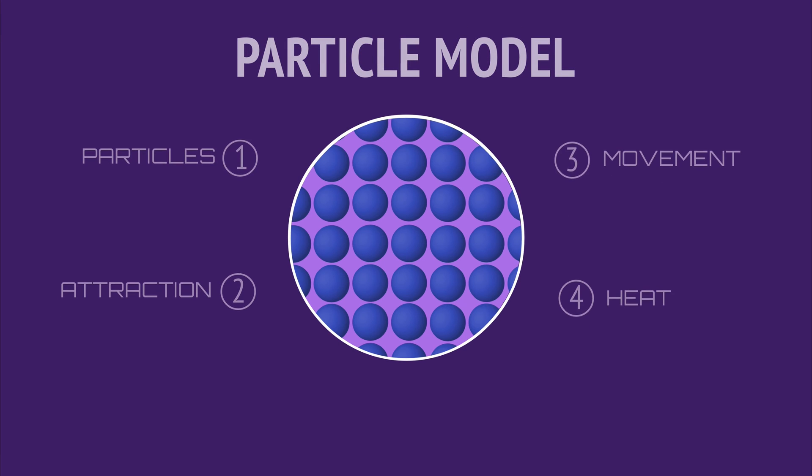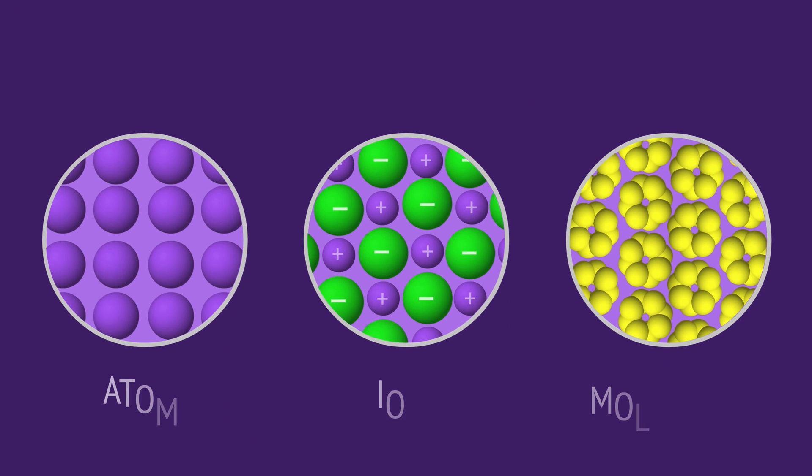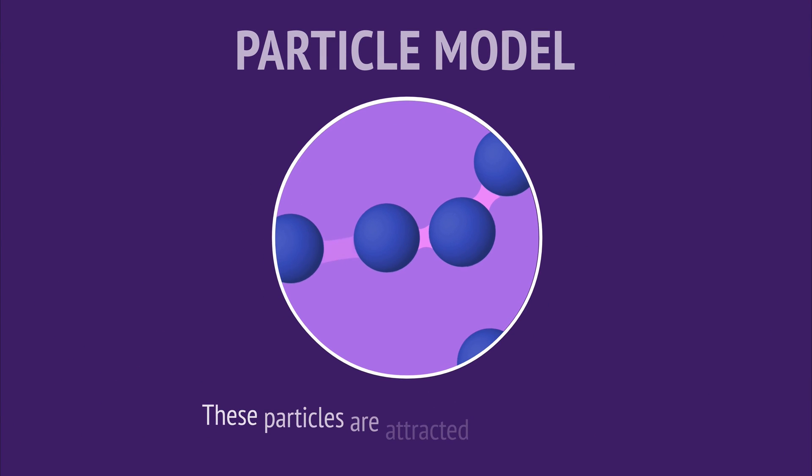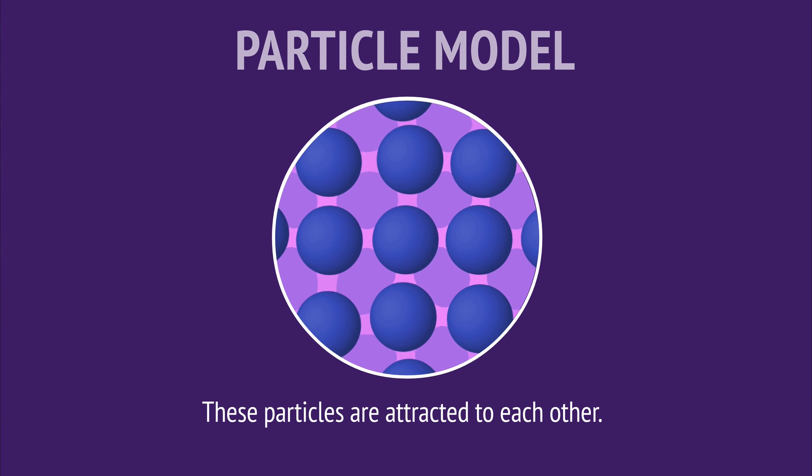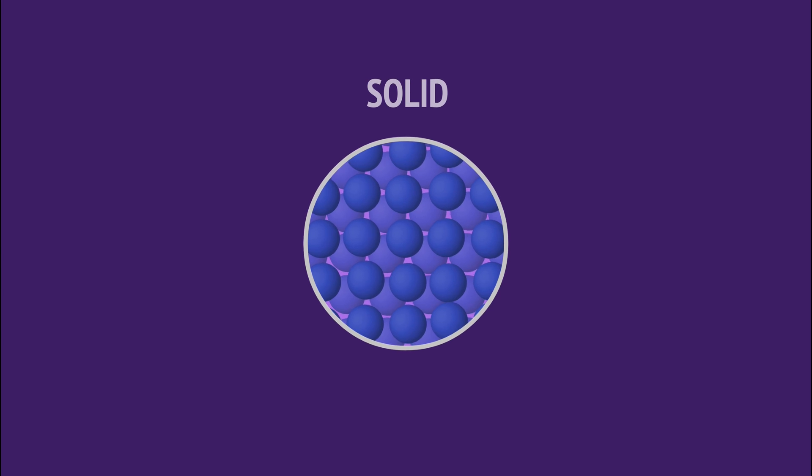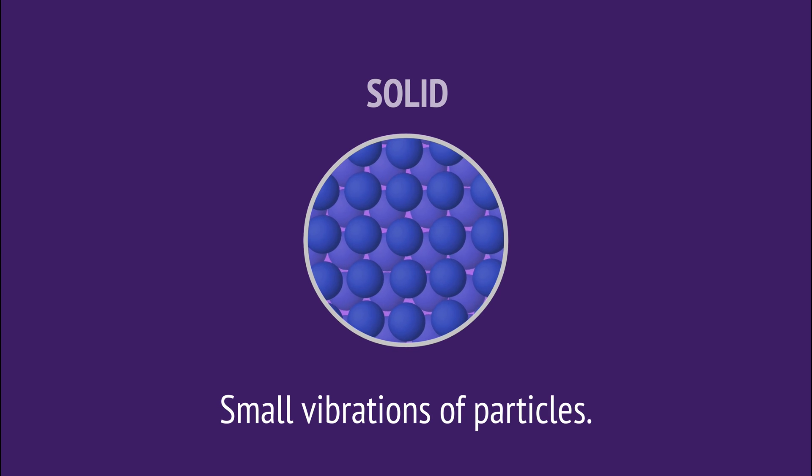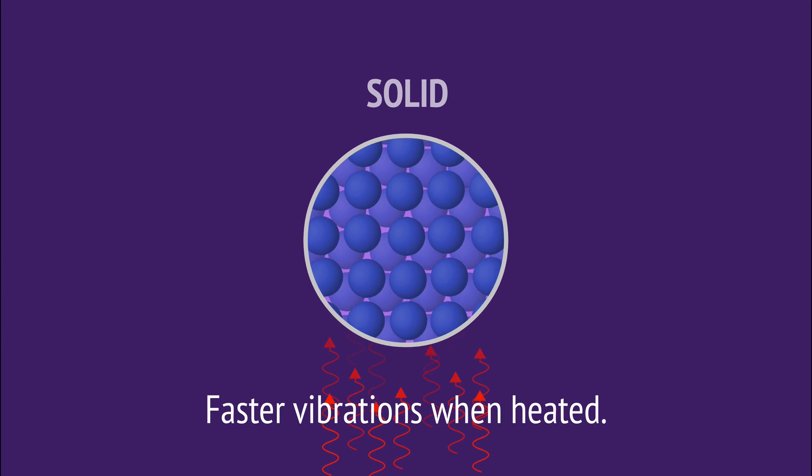So, in this video, we've looked at the four main ideas of the particle model. That all matter is made up of extremely small particles. That these particles are attracted to each other. That the particles are constantly moving. And that adding heat makes the particles move faster.